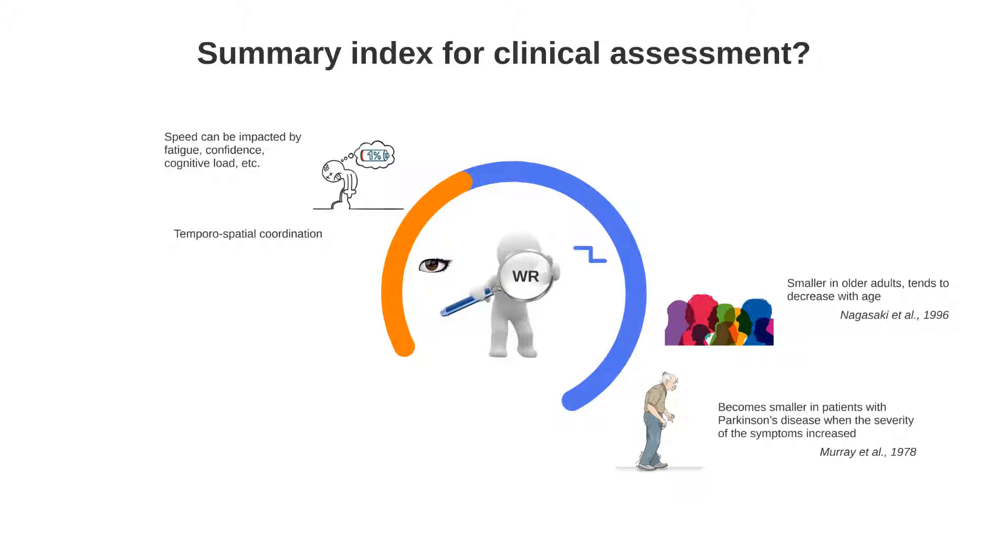In previous articles by Nagasaki et al., the walk ratio has been found to be smaller in older adults than in the young and tends to decrease with age. Murray et al. also found that it tends to become smaller in patients with Parkinson's disease when the severity of their symptoms increase. Rota et al. in 2011 and Caron in 2016 found similar results in patients with multiple sclerosis. Additionally, according to Calisea et al. in 2012, the risk of falls increases in older people with greater reduction in walk ratio when changing to fast walking. Calron's study in 2016 with multiple sclerosis patients reflected the same results.